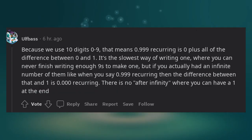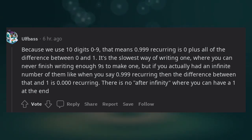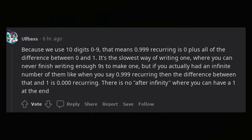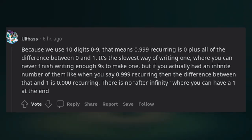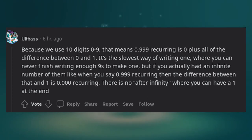Because we use 10 digits 0-9, that means 0.999 recurring is 0 plus all of the difference between 0 and 1. It's the slowest way of writing 1, where you can never finish writing enough 9's to make 1. But if you actually had an infinite number of them, like when you say 0.999 recurring, then the difference between that and 1 is 0.000 recurring. There is no after infinity where you can have a 1 at the end.